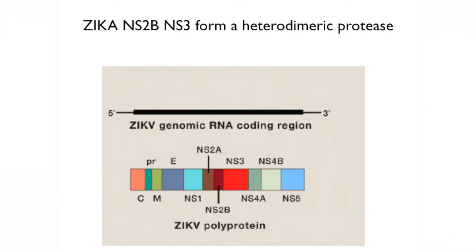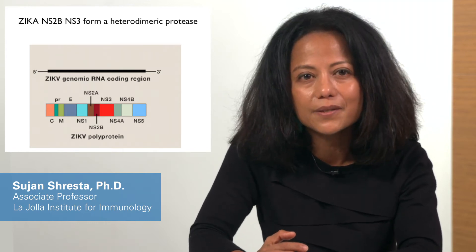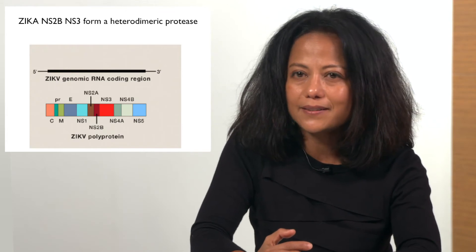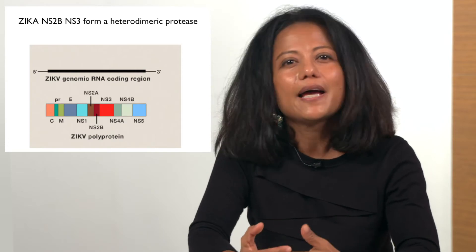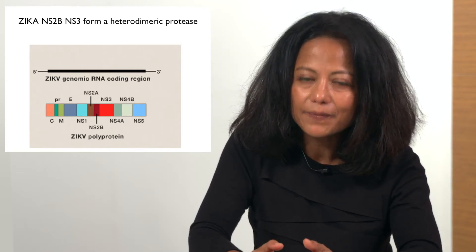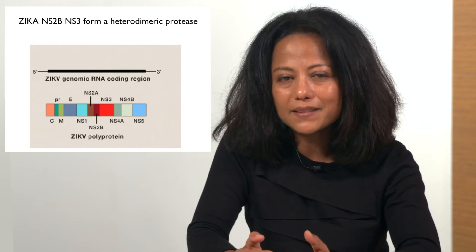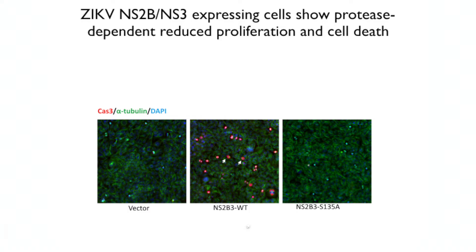Zika is a member of the flavivirus class of RNA viruses. Their genome encodes a single polypeptide that is cleaved into 10 different proteins required for completion of the viral life cycle. But introduction of any of these 10 proteins into developing neurons was not sufficient to mediate cell death. The NS2b and NS3 proteins come together after cleavage to form a heterodimer protease that is essential for cleaving the Zika polypeptide. The Gleason lab found that expression of the active, but not protease-dead, form of Zika protease was sufficient for cell death.